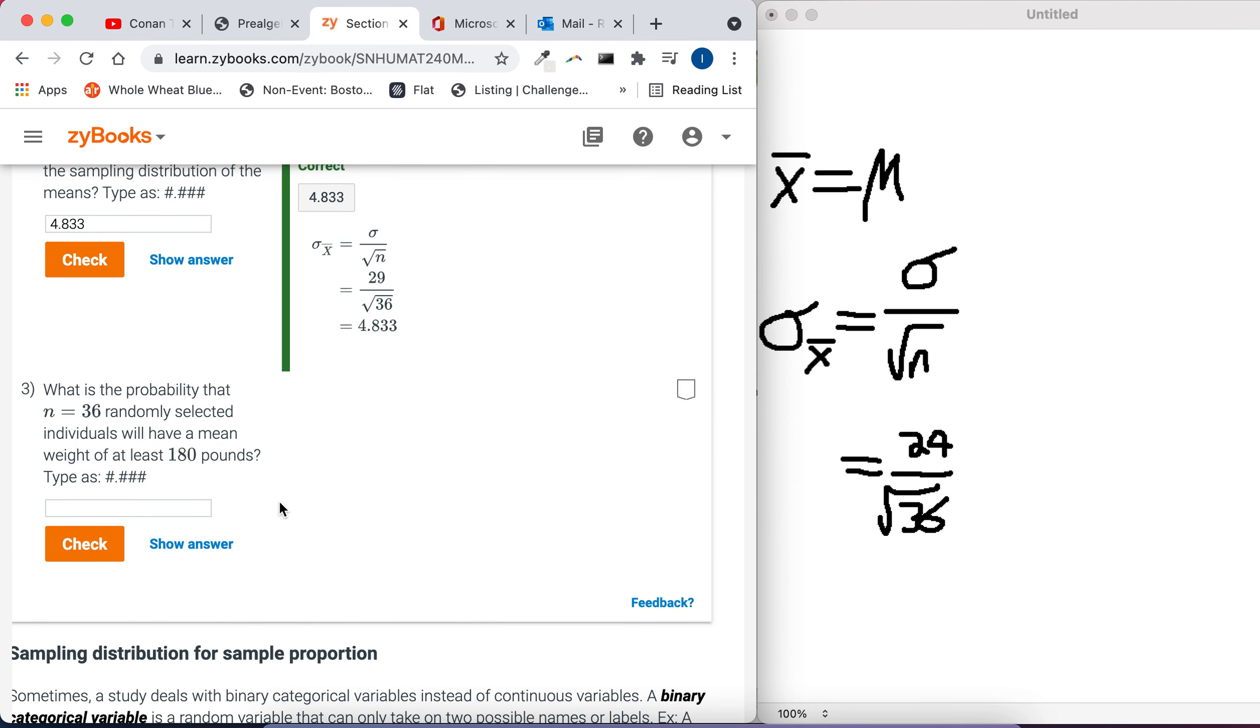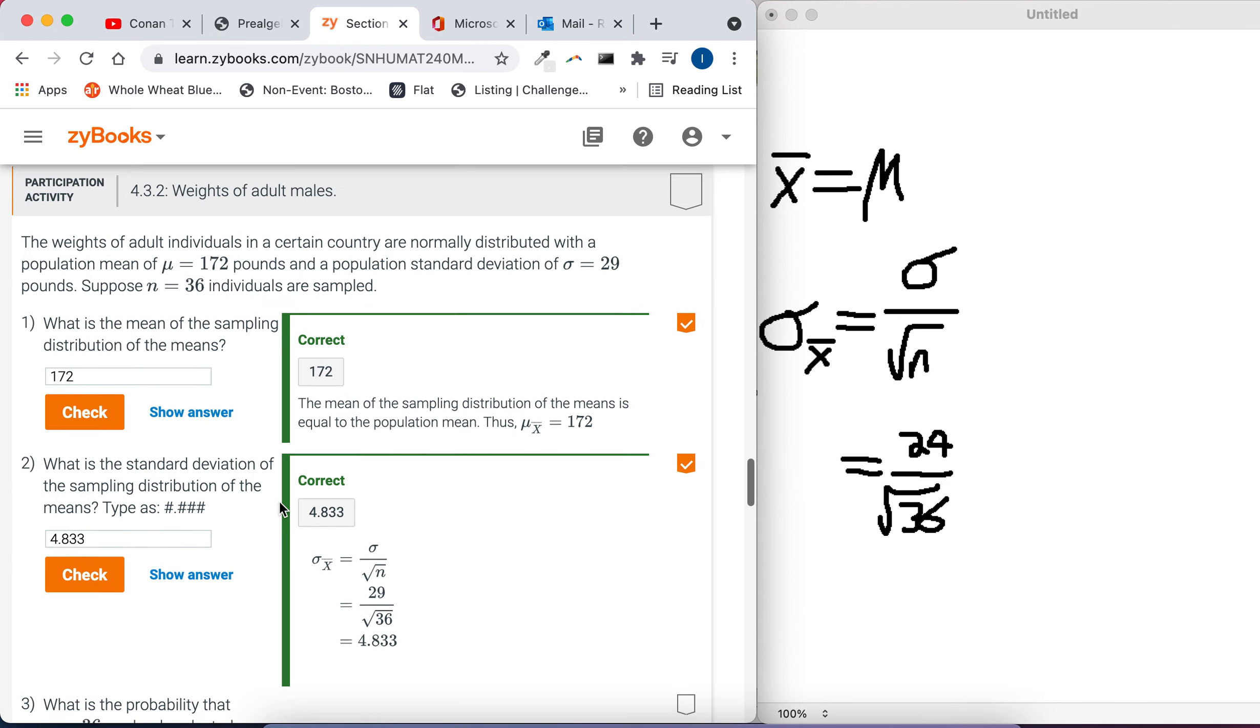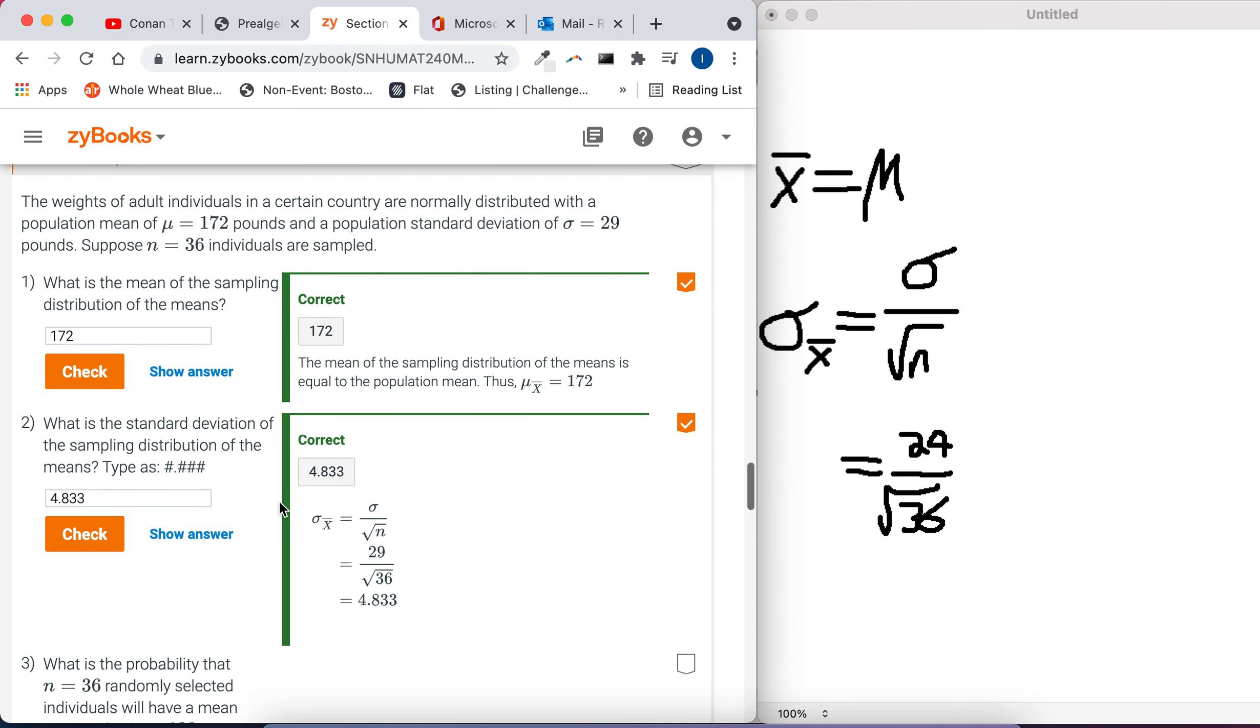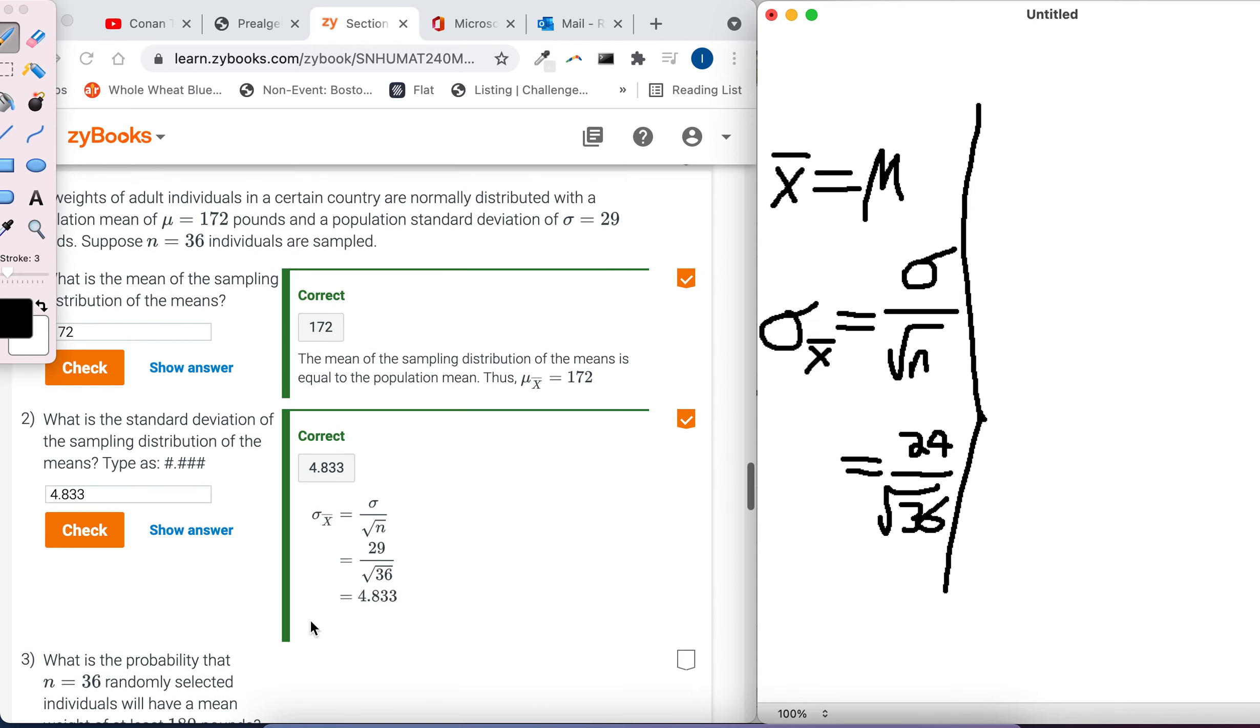What is the probability that n equals 36 randomly selected individuals will have a mean weight of at least 180 pounds? Okay, so they tell us that it's normally distributed. What that means is we can calculate a z-score, and then we can use that z-score to help us turn it into a probability.